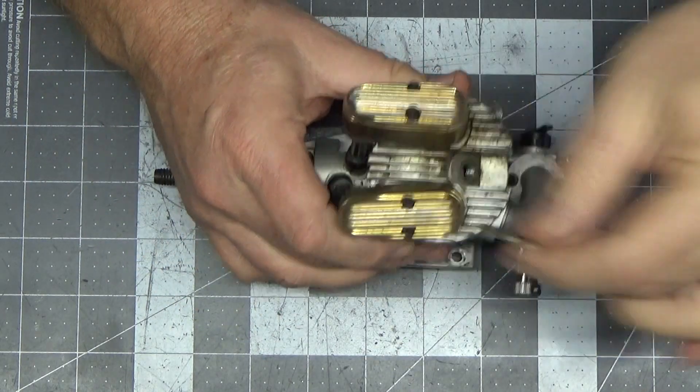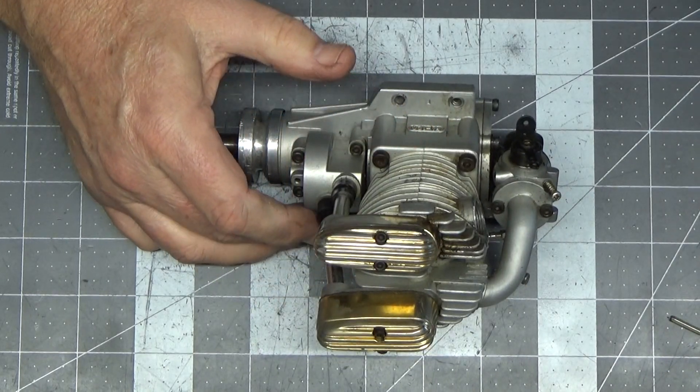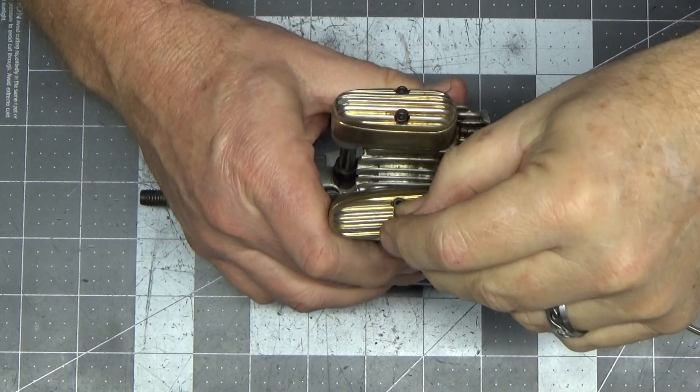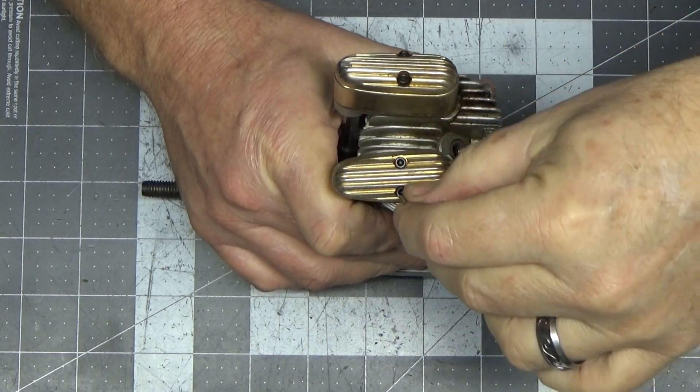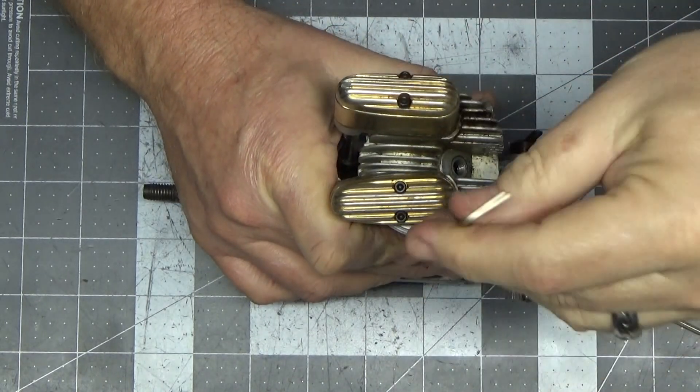Okay, so let's begin looking at this Saito 120 and see what kind of condition it's really in and why we have no compression.